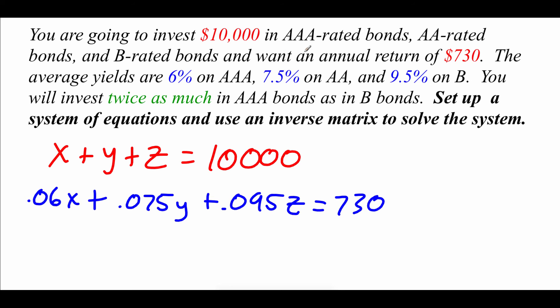Last thing we know is that we're going to invest twice as much in our AAA bonds as our B bonds. So if we look at those variables, X was our AAA bonds, and that amount is going to be double our B bonds, which we used Z to represent. So X equals 2Z. Now we do need to rearrange this last equation because we want to have our variables on one side. So really this is saying X minus 2Z equals zero.